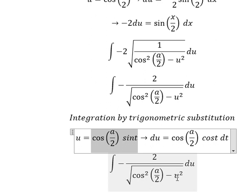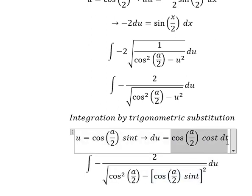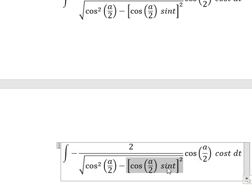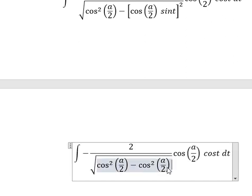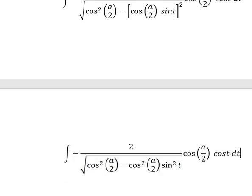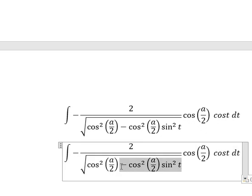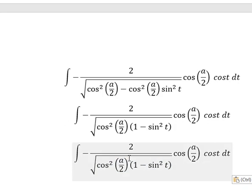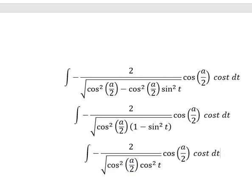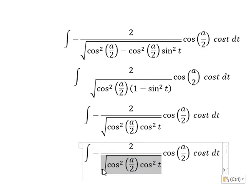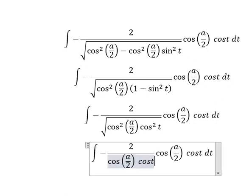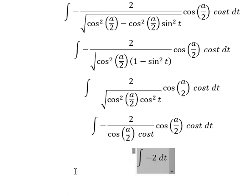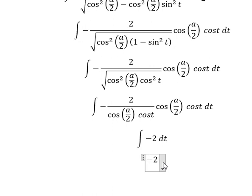So I will put this one here. du will change by this one. So this one, we have cosine(a/2) squared and sine²(t). This one and this one, we can do factorization. 1 minus sine²(t), we change by cosine²(t). The square root of this one gives cosine(a/2) · sine(t) · cosine(t). Now we simplify and we just have only negative 2. The entire integration of this one gives negative 2t plus C.